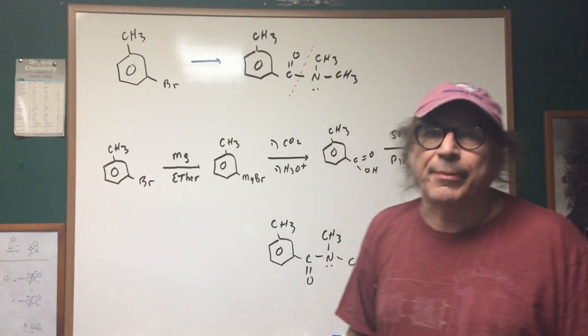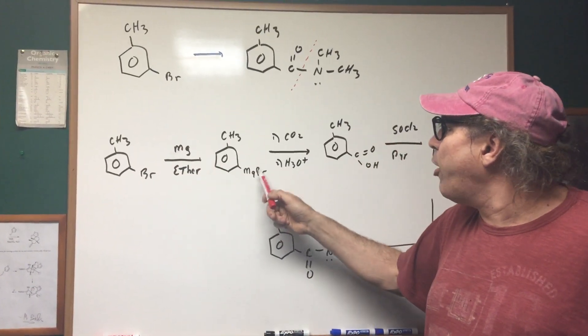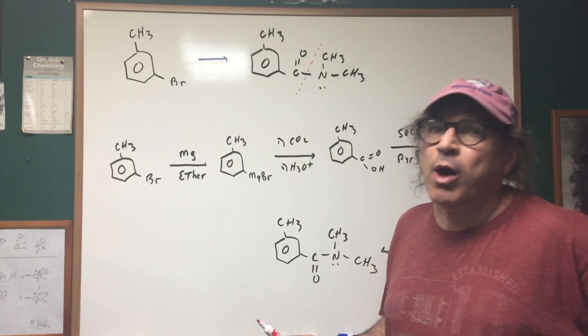So that's going to tell me to first make a carboxylic acid. So I'm going to first use the grignard, make the grignard, carbonate the grignard and get COOH.